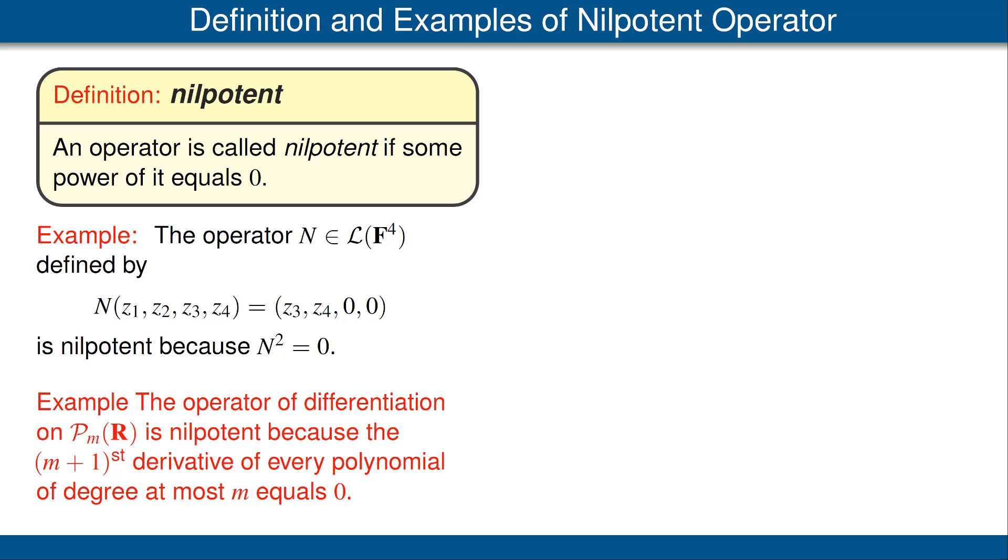For our second example, consider the vector space P_m(R), the vector space of polynomials with real coefficients and degree less than or equal to m. On that vector space, consider the operation of differentiation, so a polynomial p goes to its derivative p-prime.